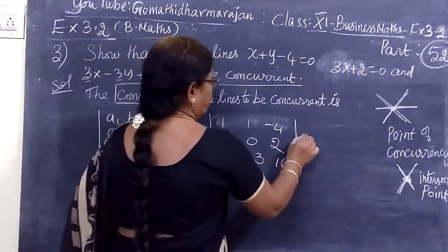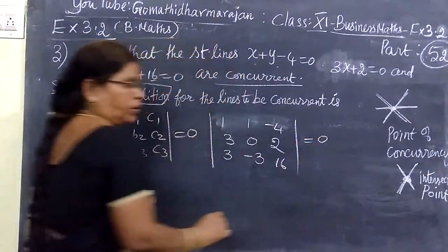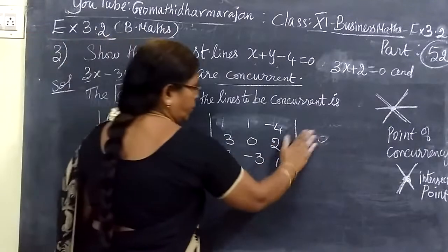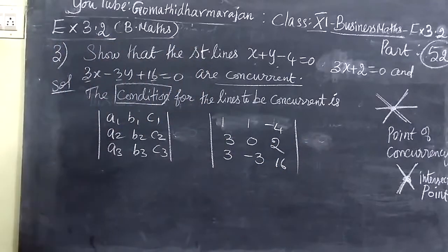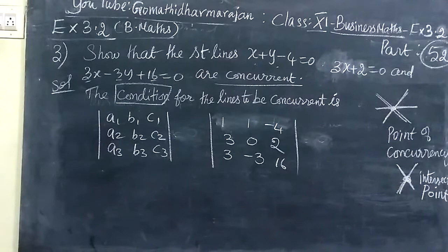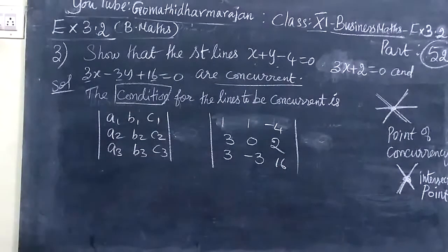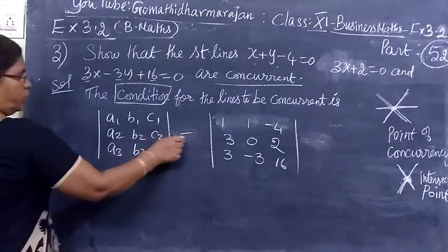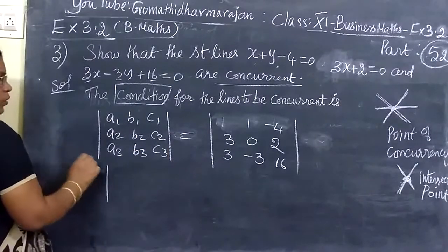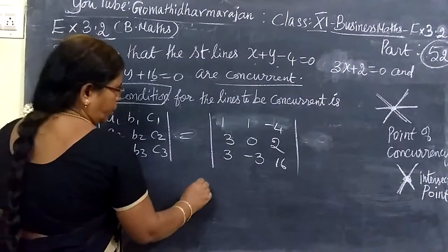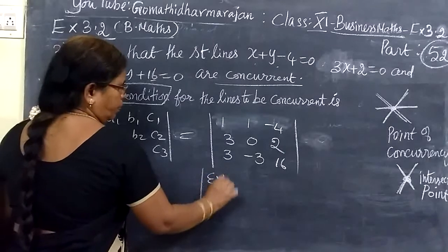It is only equal to 0 if the lines are concurrent. That means equal to 0. So here, we will be expanding by R1. R1 would be expanded.